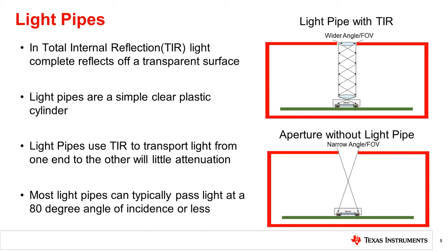Light pipes are designed to take advantage of TIR to transmit light at very low loss to different points in the system. They are usually clear cylinders made out of optical plastic that, at angles of incidence less than around 80 degrees, will have light undergo TIR inside until it exits the other end. If the input and output surfaces are parallel on the light pipe, light will exit at the initial angle of incidence.